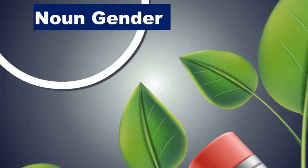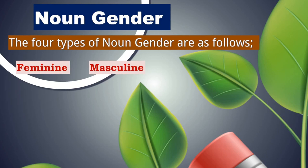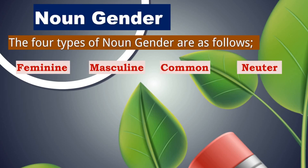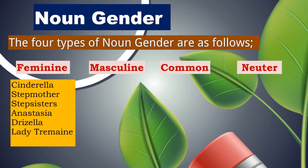We proceed to see what are the different types of noun gender — this is a second type of classification. There are four types: feminine, masculine, common and neuter gender. From the passage, these would be the feminine gender: Cinderella, stepmother, stepsisters, Anastasia, Drizella and Lady Tremaine. These are all feminine gender.